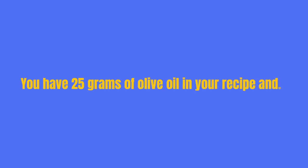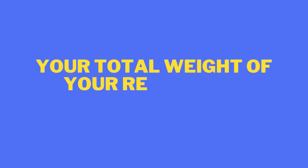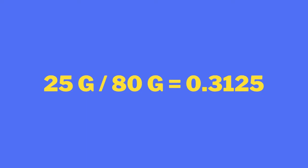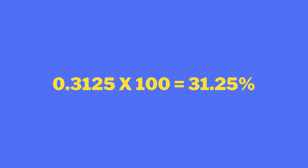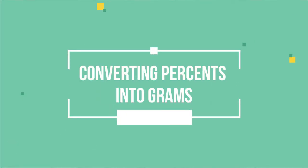There's also another way to convert weight to percent: take the number of grams of one ingredient, divide by the total gram batch, then multiply by 100. For example, you have 25 grams of olive oil in a recipe with a total weight of 80 grams. Take 25 ÷ 80 × 100, and it equals 31.25%.